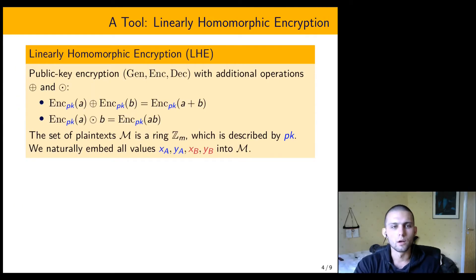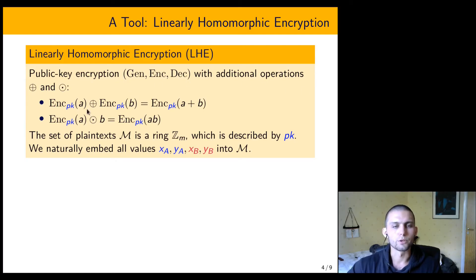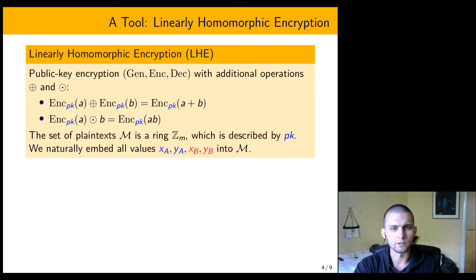To build the protocol, we will use one very interesting cryptographic construction called linearly homomorphic encryption. This is pretty much like normal public key encryption with key generation, encryption, and decryption algorithms. In addition to that, it allows for addition and multiplication operations which operate on encrypted data. The addition operation, given a public key and encryptions of A and B, produces the encryption of A plus B. The multiplication takes an encrypted value on one side and an unencrypted one on the other side and produces the encrypted multiplication. The plaintext space is a ring and the operations correspond to operations in that ring.